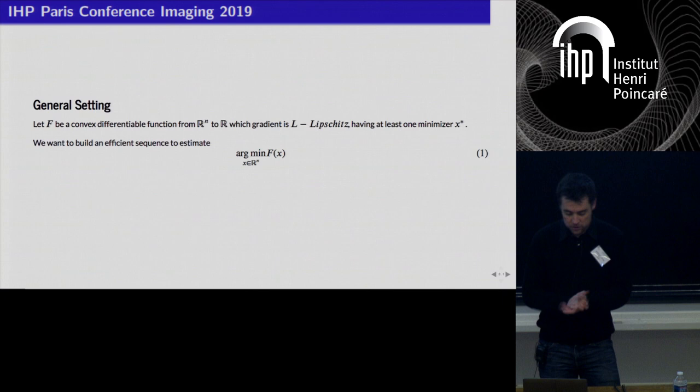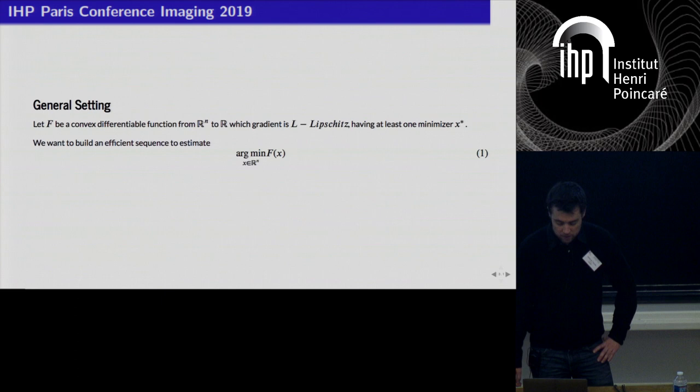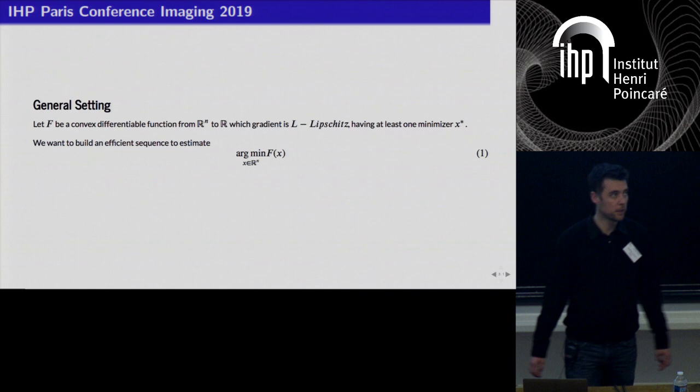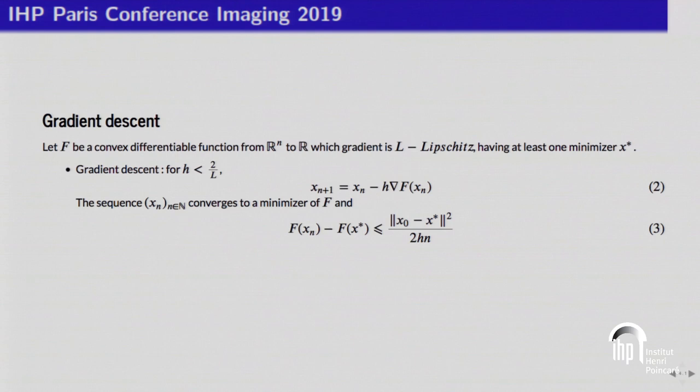The general setting: we consider F, a convex function from R^n to R, whose gradient is L-Lipschitz and having at least one minimizer, denoted x-star. We want to build a sequence to approximate x-star.